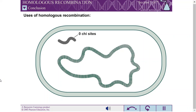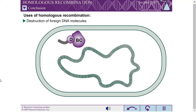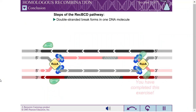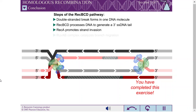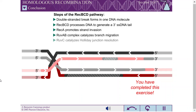For example, E. coli can use REC-BCD to destroy foreign DNA molecules. You have completed this exercise.